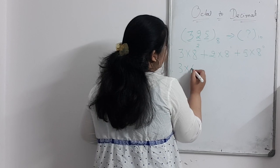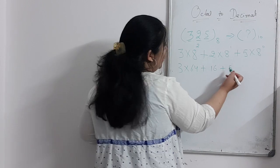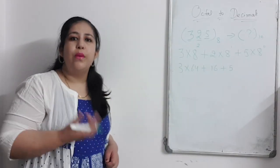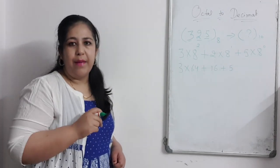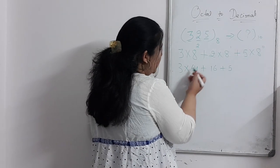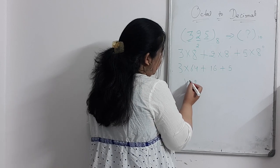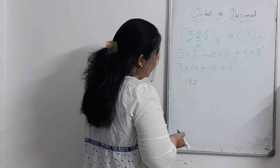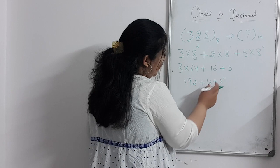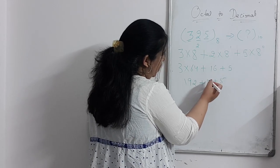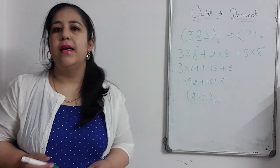Now solving: 8 squared is 64, so 3 times 64 is 192. Then 2 into 8 is 16. And 8 raised to the power 0 is 1, because any number raised to the power 0 equals 1, so 5 multiplied by 1 gives 5. Now adding: 192 plus 16 plus 5. That gives us 213 in decimal.